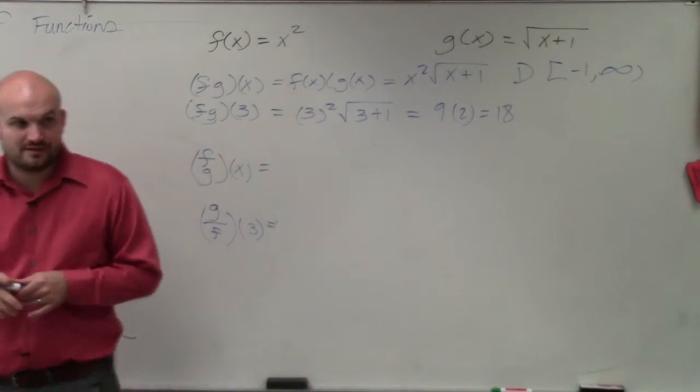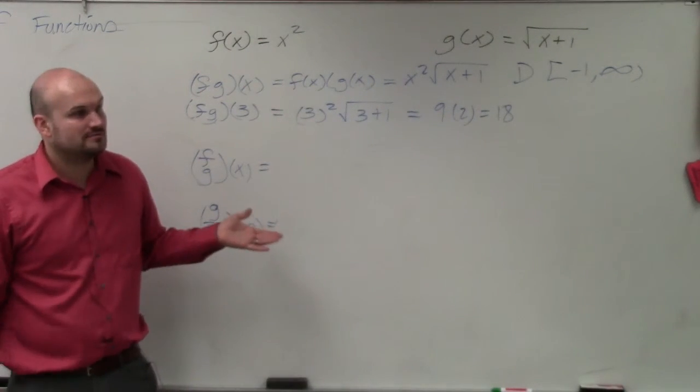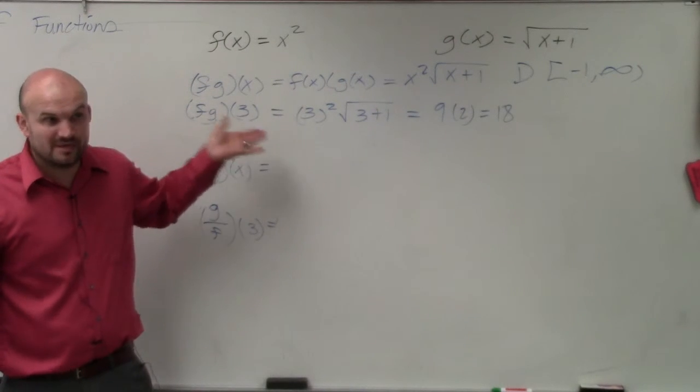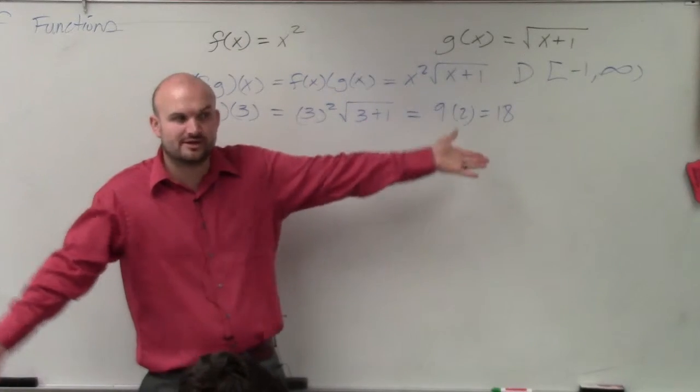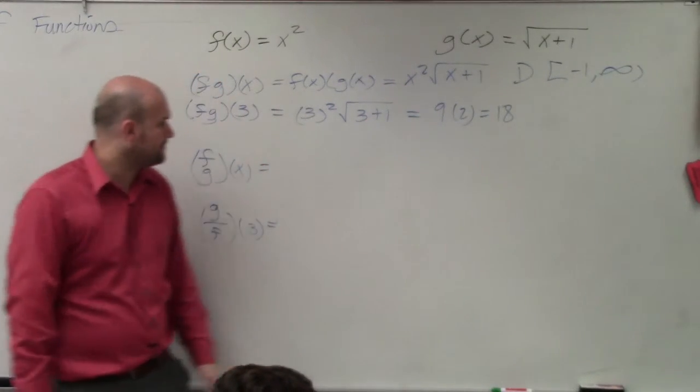x is negative 1 comma infinity. It has to be greater than negative 1 or equal to negative 1. It can be equal to negative 1. That's fine because you can plug in negative 1 for x. Negative 1 plus 1 is 0. You can take the square root of 0.